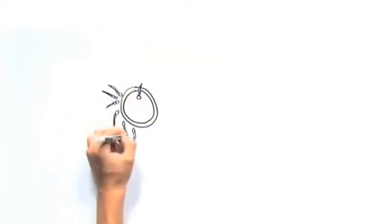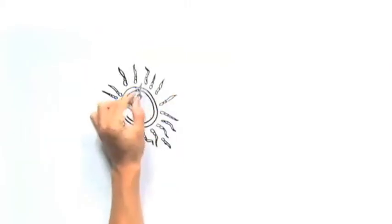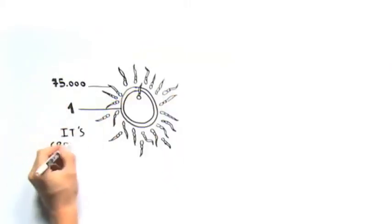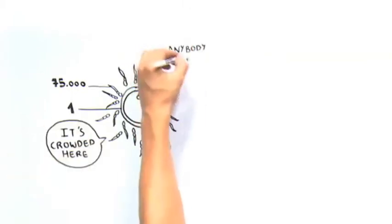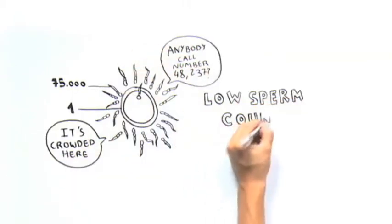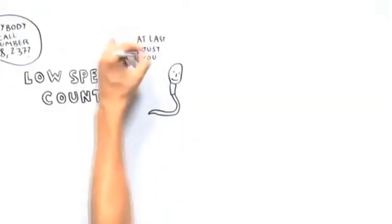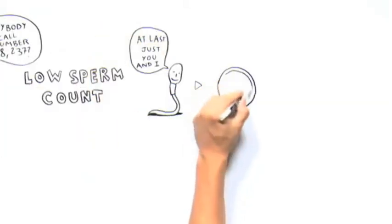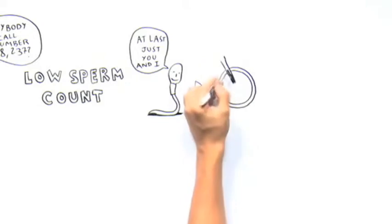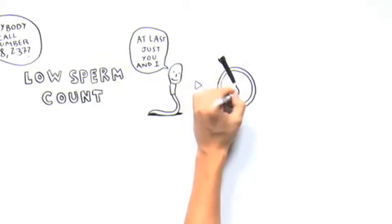The sperm and the eggs are incubated together at a ratio of about 75,000 to 1 in the culture. In certain situations, such as low sperm count or motility or abnormal sperm morphology, a single sperm may be injected directly into the egg using intracytoplasmic sperm injection, also known as ICSI.